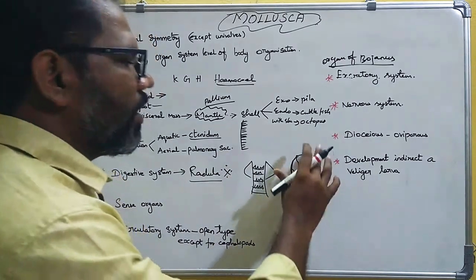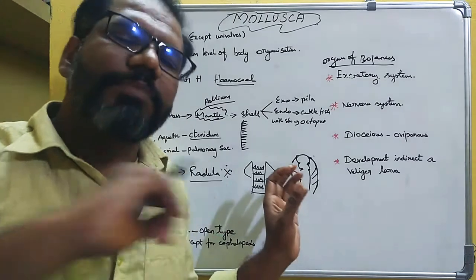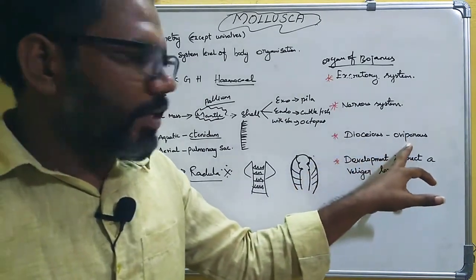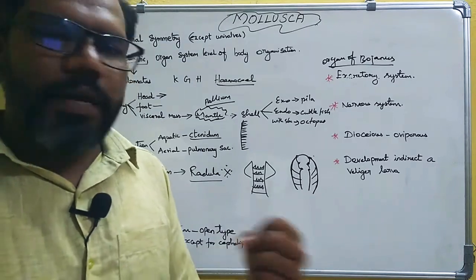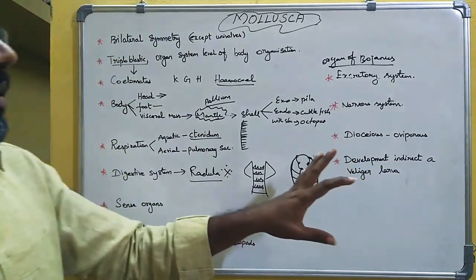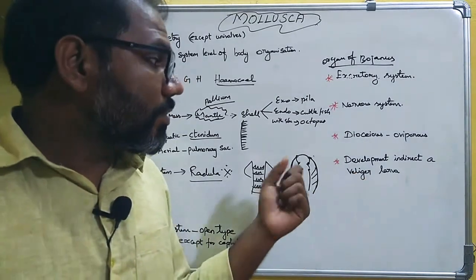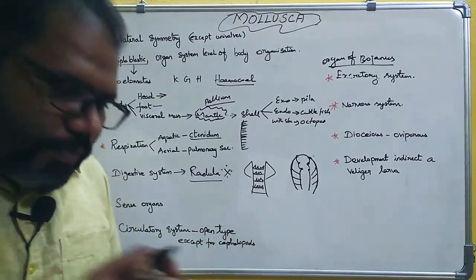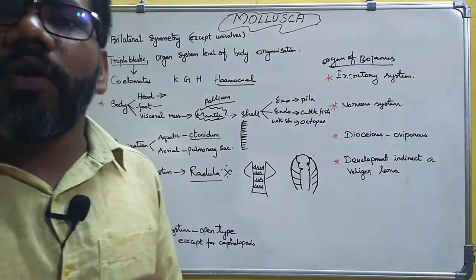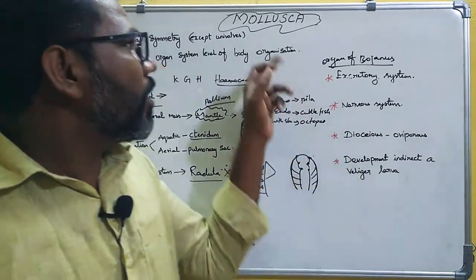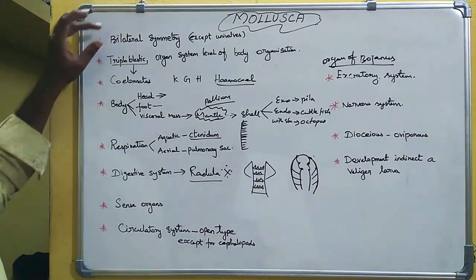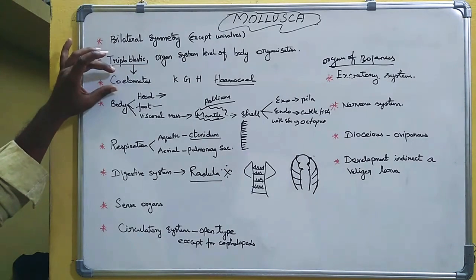Mollusca are dioecious — male and female are separate. They are oviparous, laying eggs. Fertilization can be internal or external. Development is indirect, passing through a larval stage. The larva is a modified trochophore larva, also called a veliger larva.